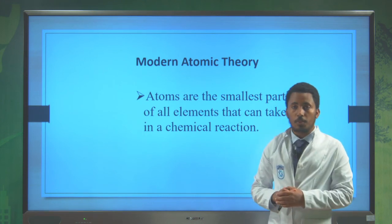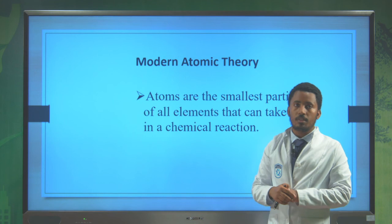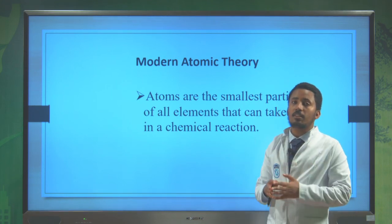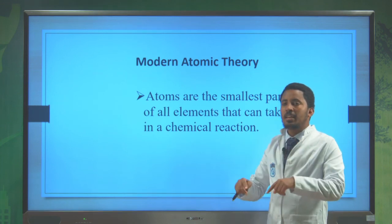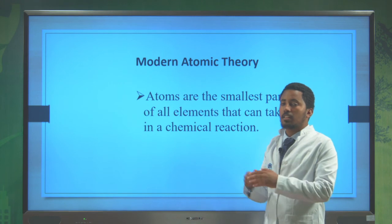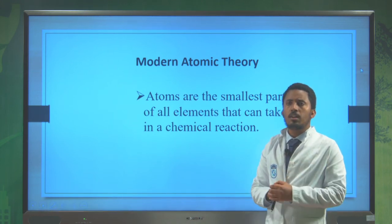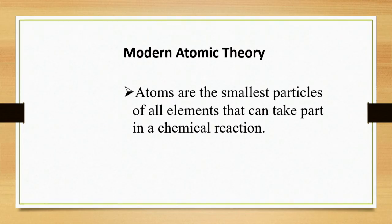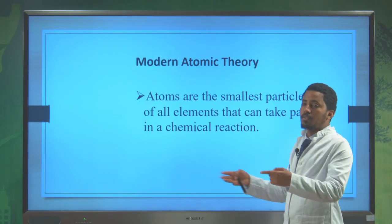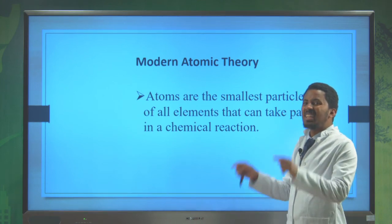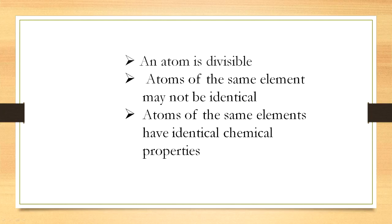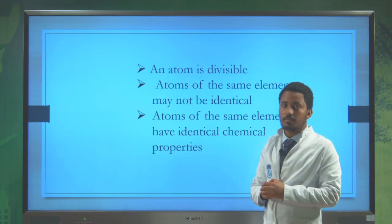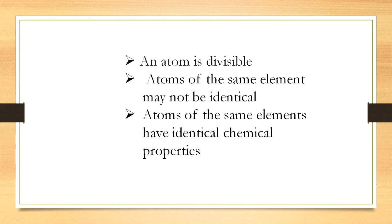After Dalton's atomic theory we got modern atomic theory. This modern atomic theory is really similar with Dalton's but they rearranged it. The first postulate is that atoms are the smallest particles of all elements that can take part in a chemical reaction, but they have subatomic particles like electron, proton and neutron. The second postulate is an atom is divisible.